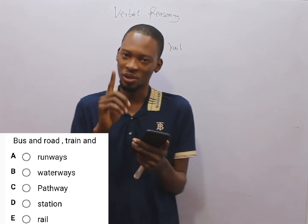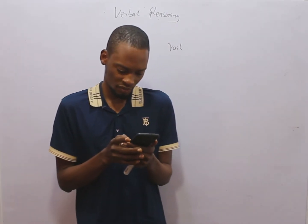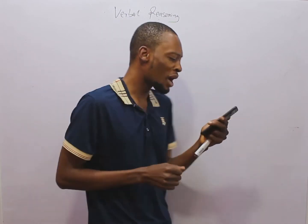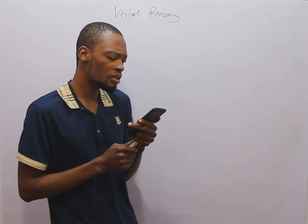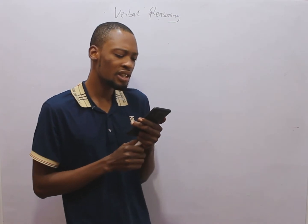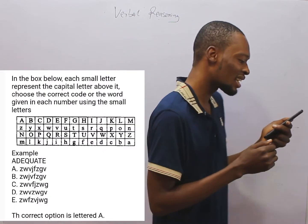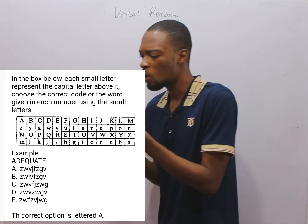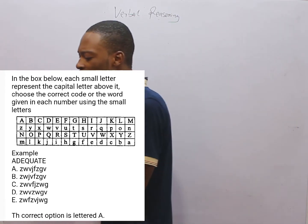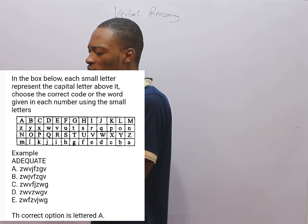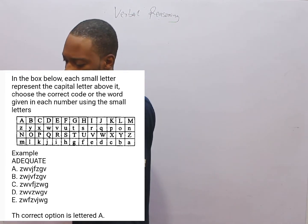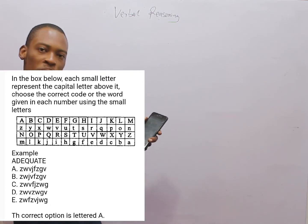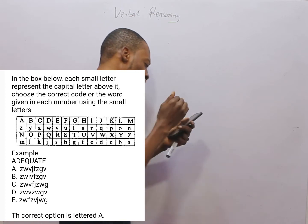Look at this question. What we are asked to do is in the box represented below — each small letter represents the capital letter above it. Choose the correct code for the word given in each number using the small letters. Look at the box; I've zoomed it so you can see it better.